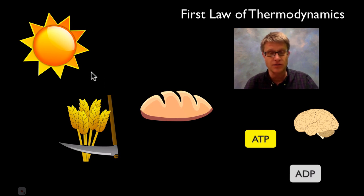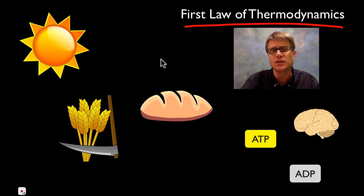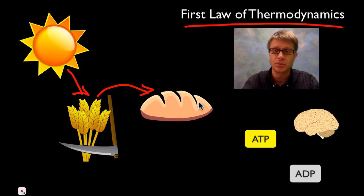There are two laws of thermodynamics. The first law of thermodynamics you're probably familiar with. It's basically the law of conservation of energy. Energy is converted from sun to wheat to plants to ATP to ADP, using that energy in your brain.